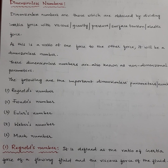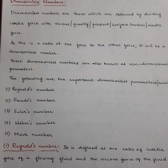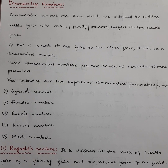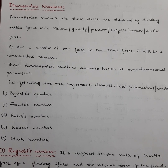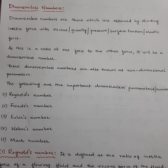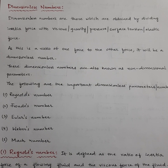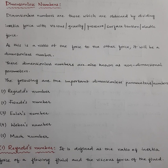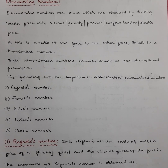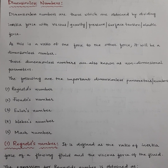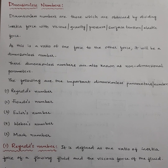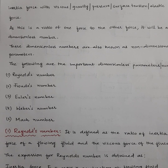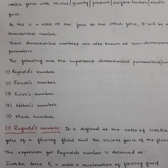They are called dimensionless numbers because you are dividing inertia force with the other force, so the units will get cancelled, resulting in a non-dimensional or dimensionless number. So we have totally 5 numbers: first one is Reynolds number, second one is Froude's number, third one is Euler's number, fourth one is Weber's number, and the fifth one is Mach number.